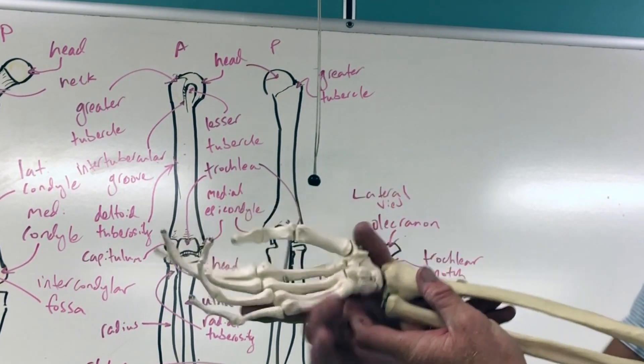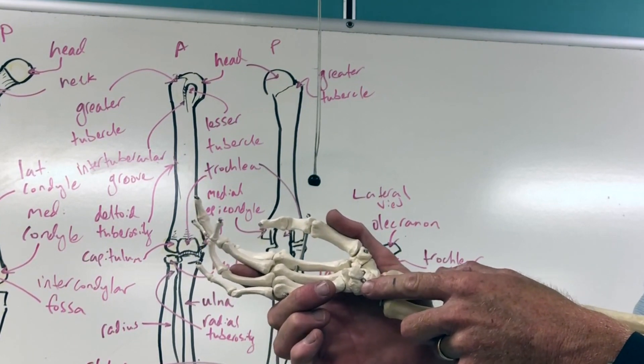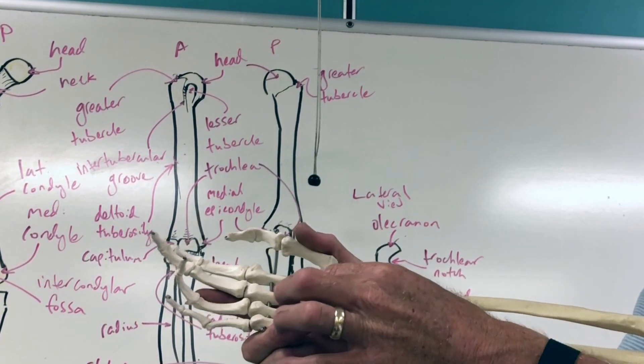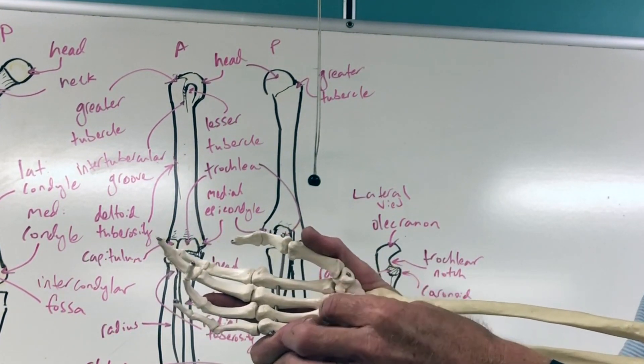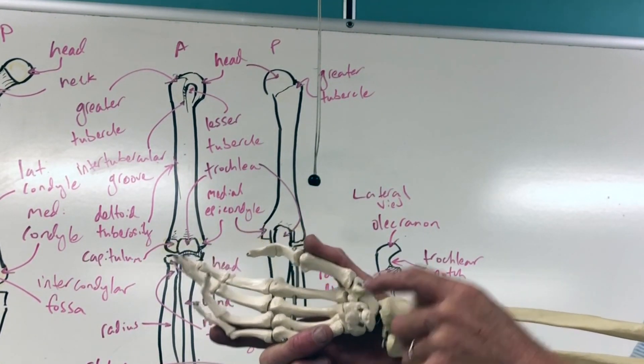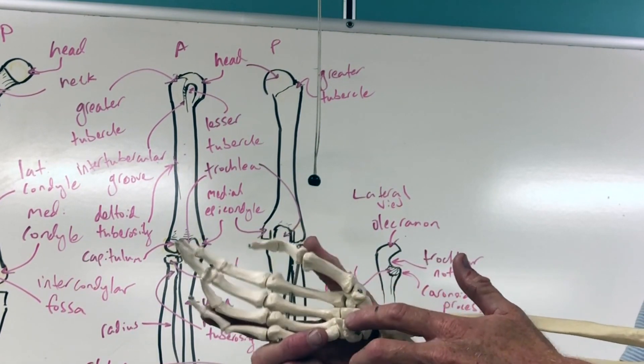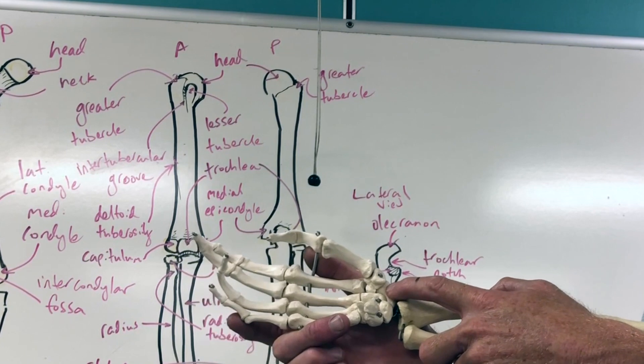The bone connected to the lunate is called the triquetrum, and then this little bone that sits more anterior on the triquetrum, I got a little bump right there, that's called the pisiform. So it goes scaphoid, lunate, triquetrum, pisiform.